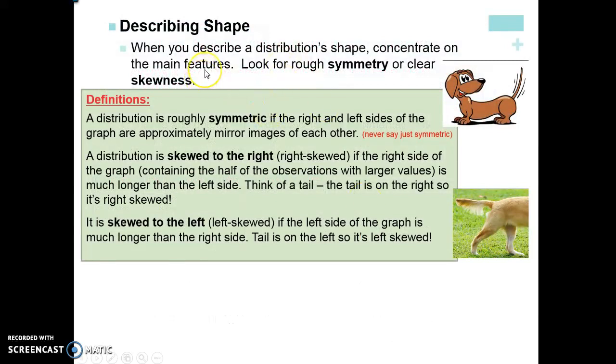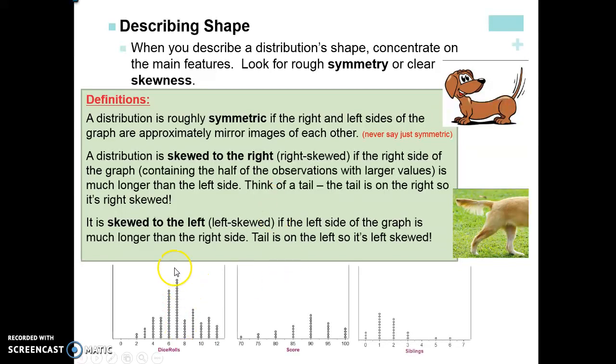So what does it mean to describe the shape? We're looking at whether or not the shape is symmetrical or skewed. Skewed means there's a lot of data to the left or a lot of data to the right. A distribution is roughly symmetric if the left and right sides are approximately mirror images of each other. If you could fold the graph in half that would mean that it's symmetric. This is a symmetric graph down here. If I fold this in half, the left side is about similar to the right side. Don't ever just say symmetric because nothing's going to be perfect.